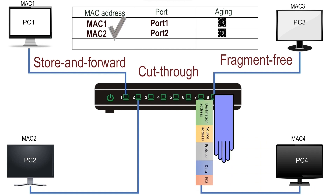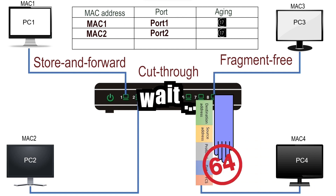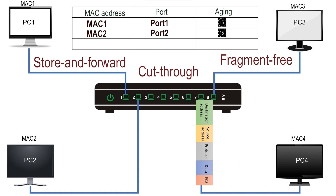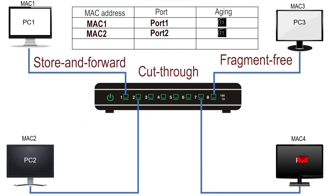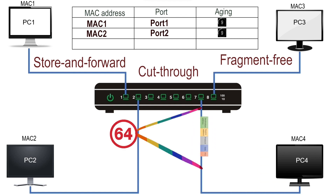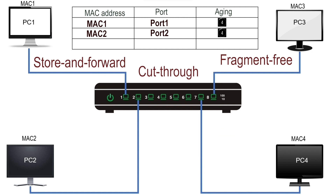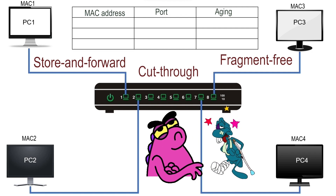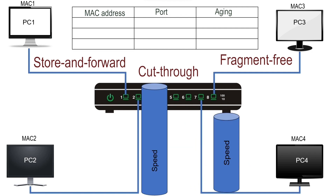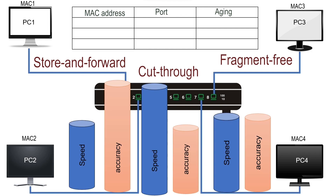In the fragment-free method, after determining the forwarding port, the switch waits until the first 64 bytes of the frame are received. The 64 bytes is the minimum legal size of an Ethernet frame. An Ethernet frame smaller than 64 bytes is known as a runt frame, which is a corrupt frame. This method is a modified version of the cut-through method and reduces the number of runt frames being switched. Compared to the other two methods, it provides moderate speed and accuracy.